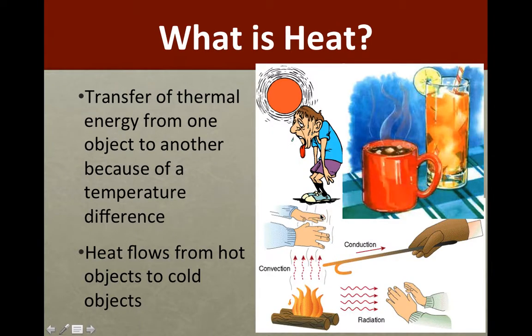Heat is basically a transfer of thermal energy from one object to another because of a temperature difference. Key to remember: heat flows from hot to things that are cold, not vice versa. Heat is always released and you're feeling it. There are three ways that heat can be released or felt: convection, conduction, and radiation. We're going to talk about each of those.